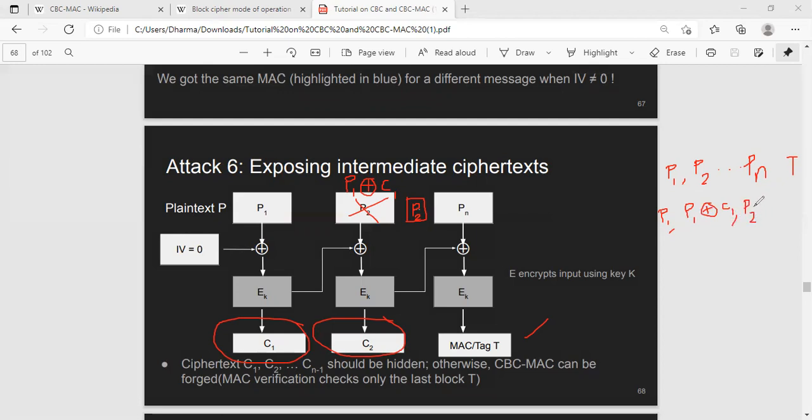But what is the resulting MAC for this particular plaintext? It's also T, interestingly, because of the XOR property I just mentioned. The C1 will get cancelled out with C1.